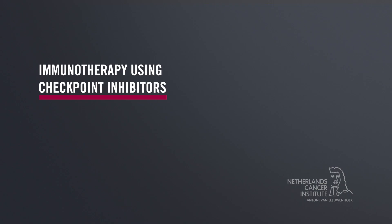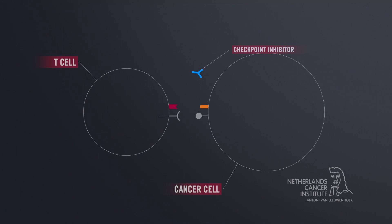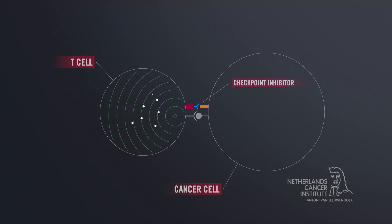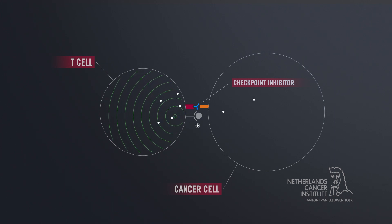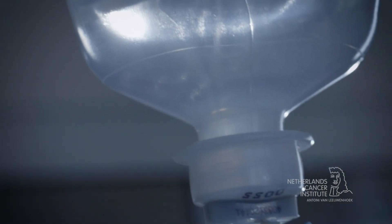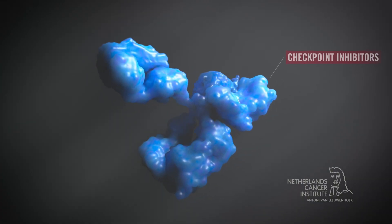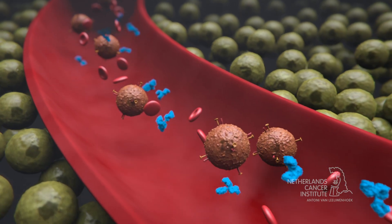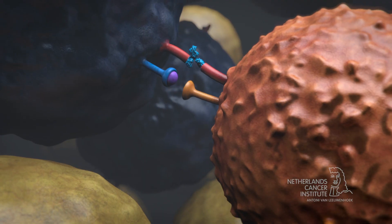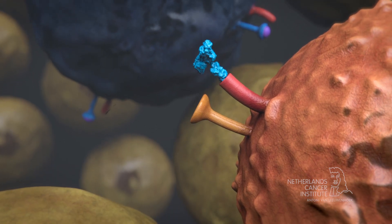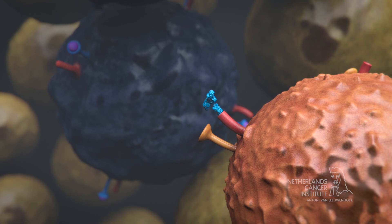Immunotherapy using checkpoint inhibitors tries to prevent this manipulation by cancer cells by blocking the cancer cell's ability to trigger the stop signal in T cells. In this type of treatment, the patient receives an infusion with checkpoint inhibitors, which are then transported through the blood to the tumor site. There, the checkpoint inhibitors prevent the cancer cells from restraining the activity of the T cells, forming a barrier between the stop signal and the T cell.